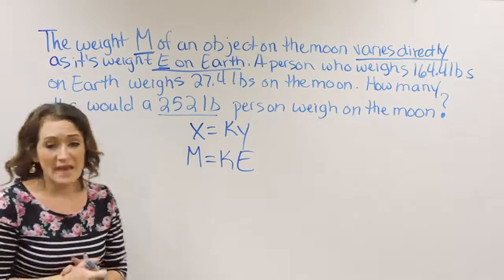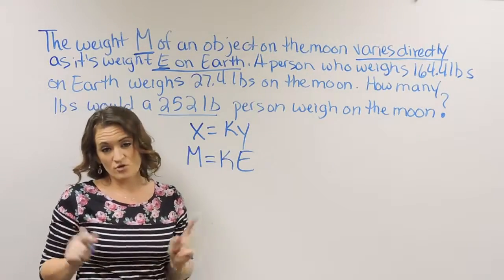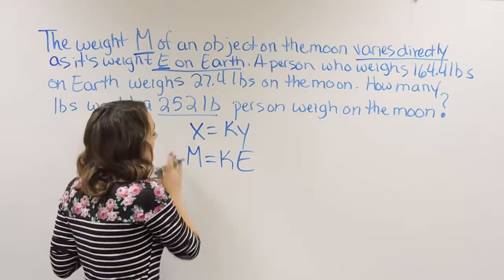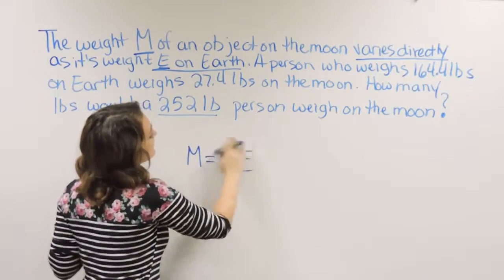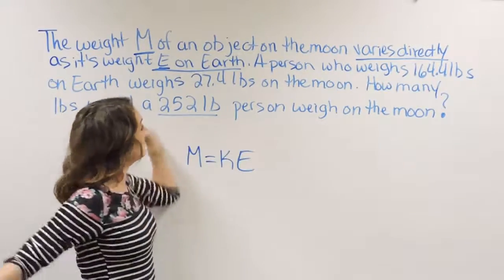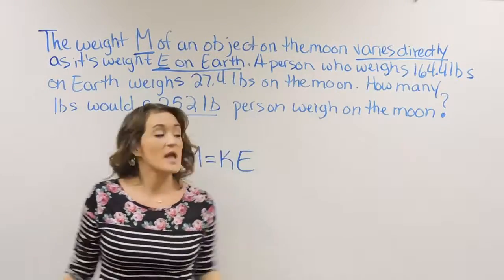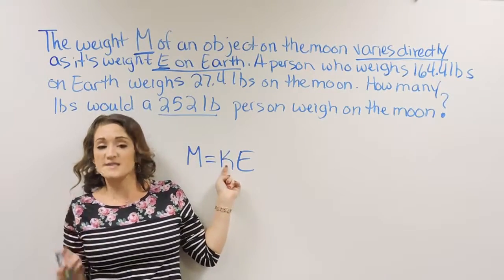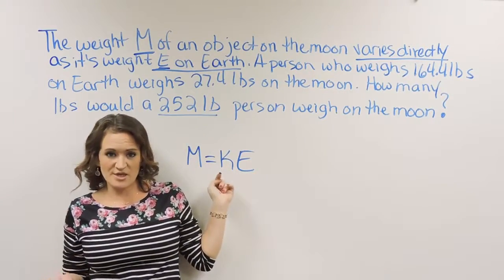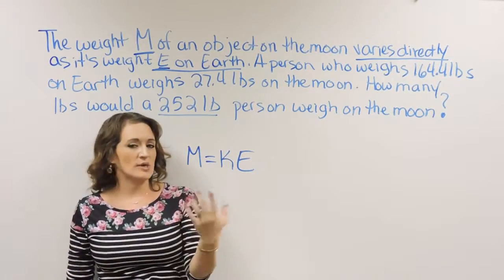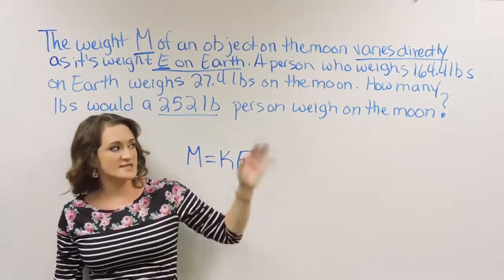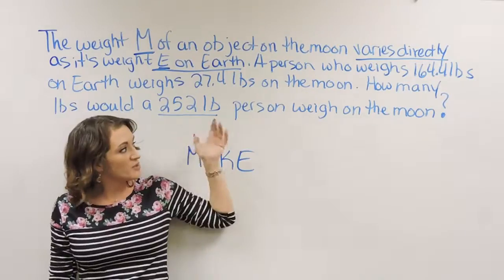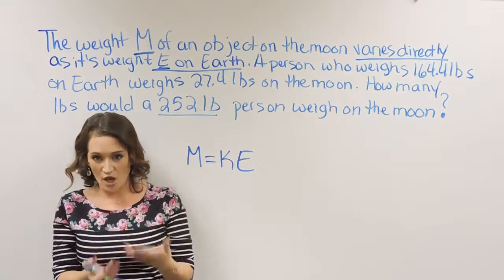When it comes to variation problems, there are normally two-part problems. The first part is taking information given at the beginning of the problem and using that to calculate K, your constant of variation. This constant is going to remain the same for that situation, and you'll use it to calculate other things.